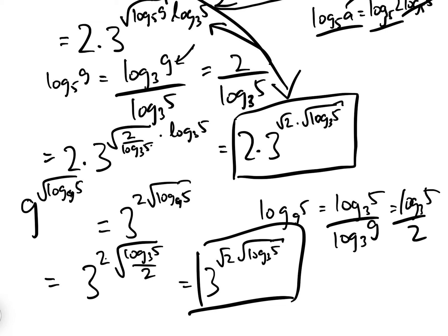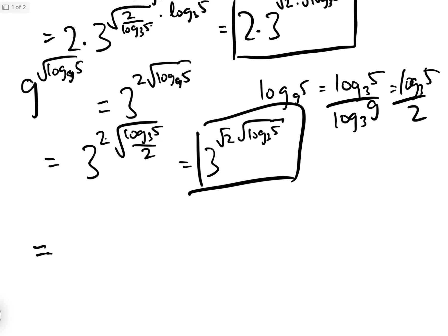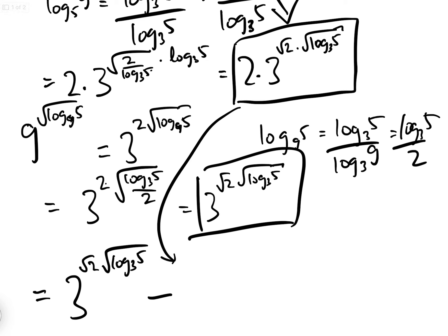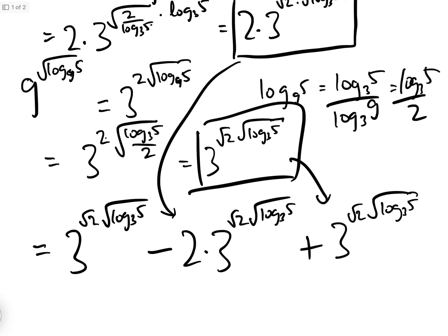Now let's add them all up. The first term is 3^(√2 · √(log_3(5))), the second term is 2 times 3^(√2 · √(log_3(5))), and the third term is 3^(√2 · √(log_3(5))). So we have 1 minus 2 plus 1, all multiplied by 3^(√2 · √(log_3(5))), which equals 0. The whole expression adds up to 0.